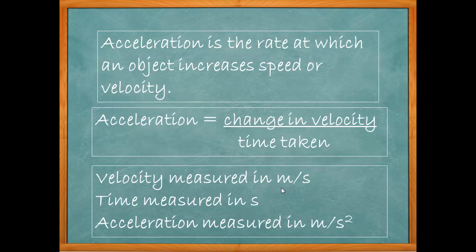Velocity is measured in meters per second. Time is measured in seconds. Acceleration is meters per second per second, written as meters per second squared. You may see it written in some books as meter dot S to the minus 2. Acceleration is measured as meters per second squared.